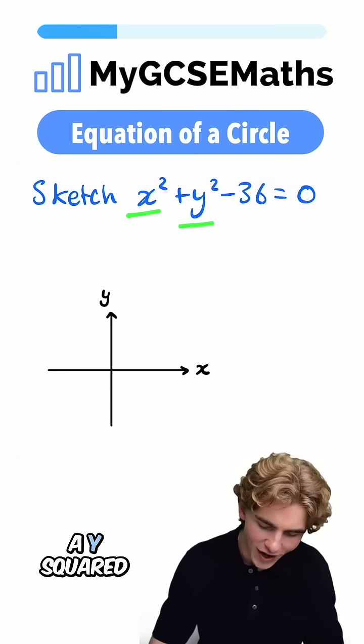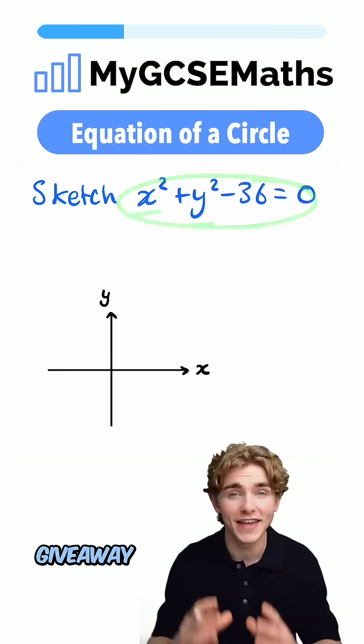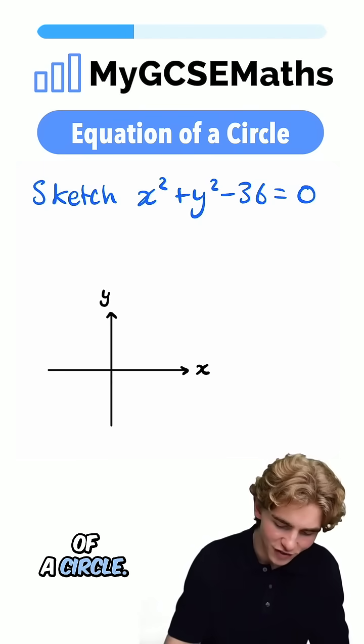Whenever we have an x² and a y² in the same equation, it's going to be a giveaway sign that we're dealing with the equation of a circle.